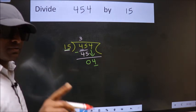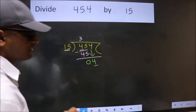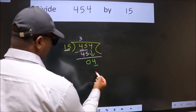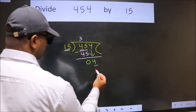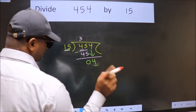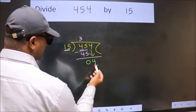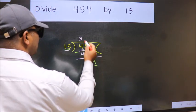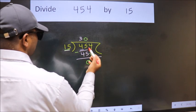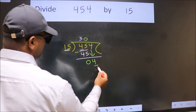Instead of that, what we should think of doing is which number should we take here? If I take 1, we will get 15, but 15 is larger than 4. So what we do is we take 0 here. So 15 into 0, 0.